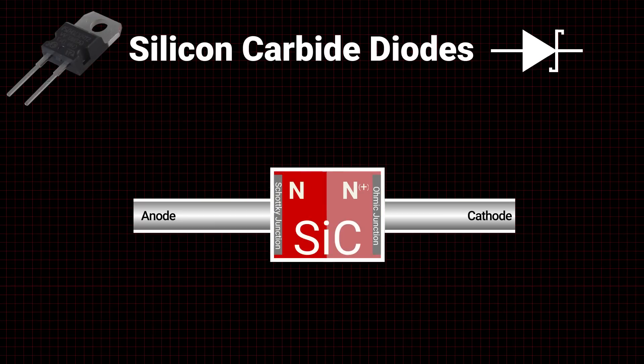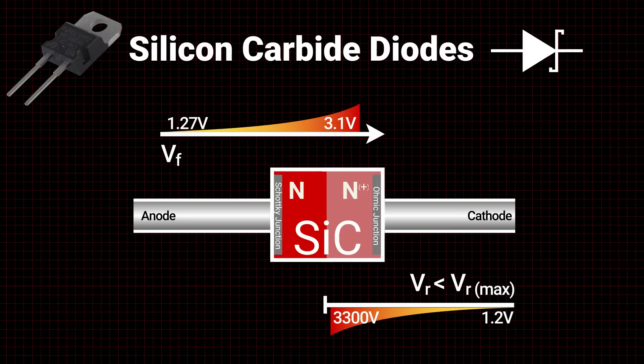Silicon carbide diodes provide enhanced performance over traditional silicon devices by offering high maximum reverse voltages as well as low forward voltages.